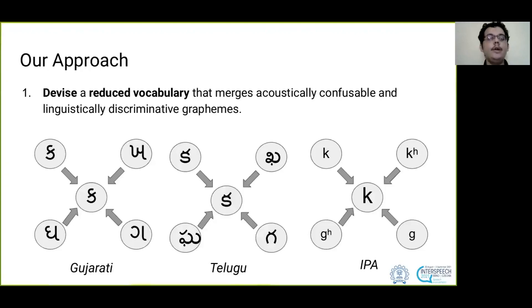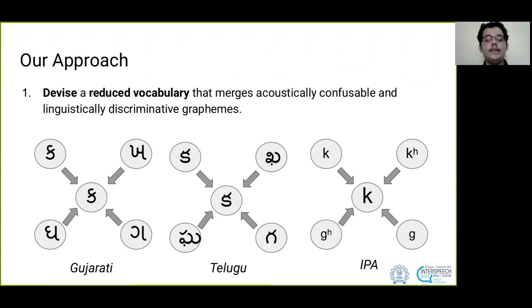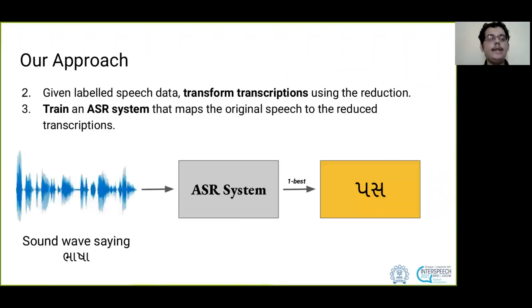We devise a reduced vocabulary that merges acoustically-confusible but linguistically discriminative graphemes. These are examples of such a reduction for Gujarati, Telugu, and IPA.